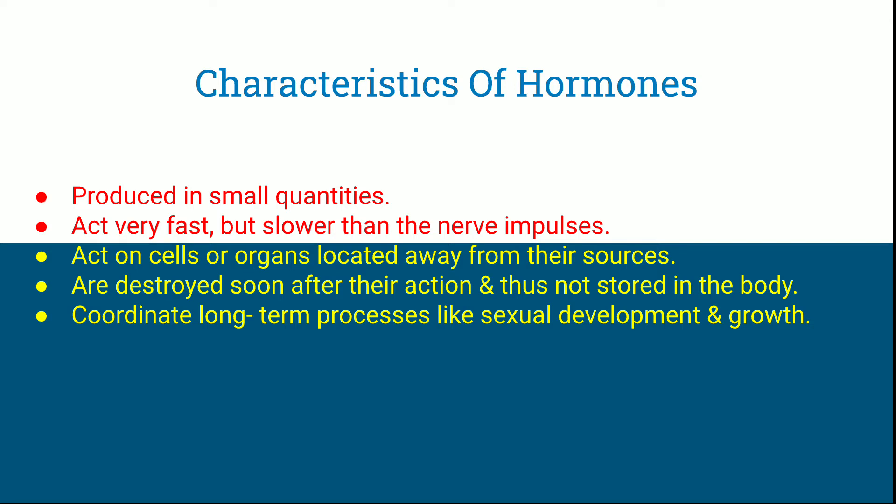Next are the characteristics of hormones. They are produced in small quantities and act very fast, but slower than nerve impulses. They act on cells or organs located away from their sources. They are destroyed soon after their action and thus are not stored in the body. They coordinate long-term processes like sexual development and growth.